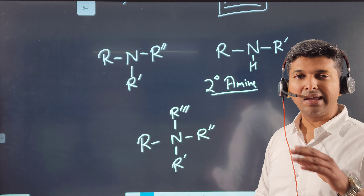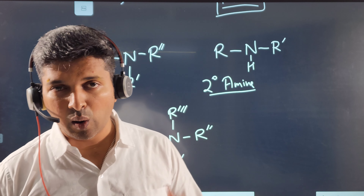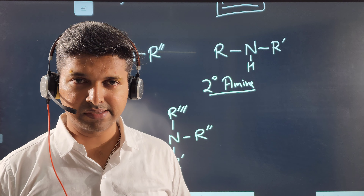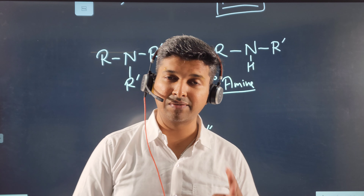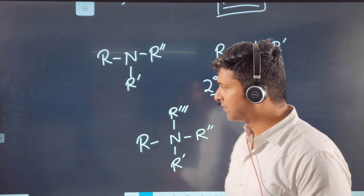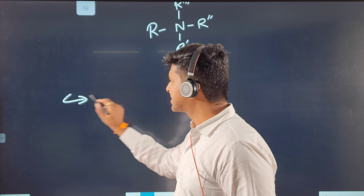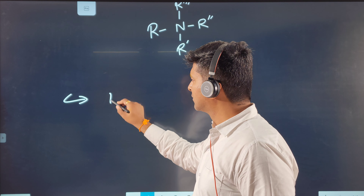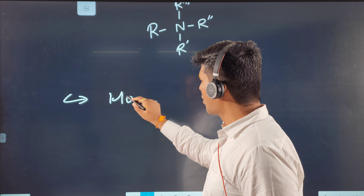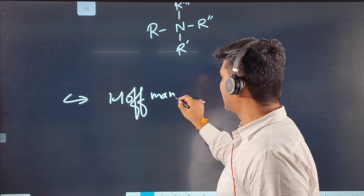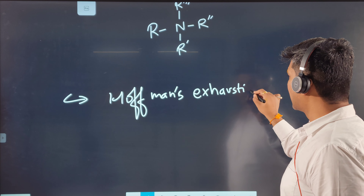In our first method of preparation, we are going to prepare primary, secondary, tertiary, and quaternary amines all in one reaction. This reaction is called Hofmann's exhaustive alkylation — technically from the second step onward it carries that name.